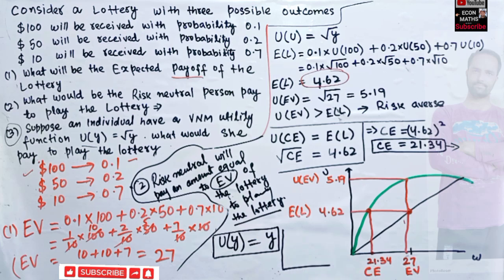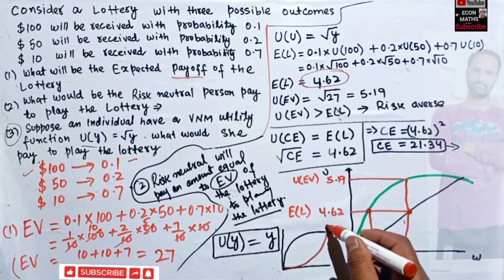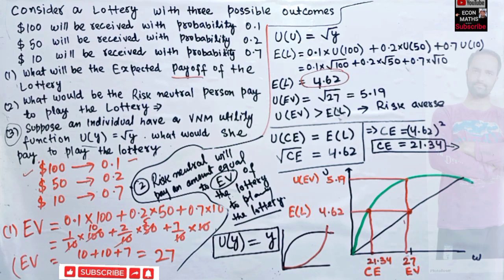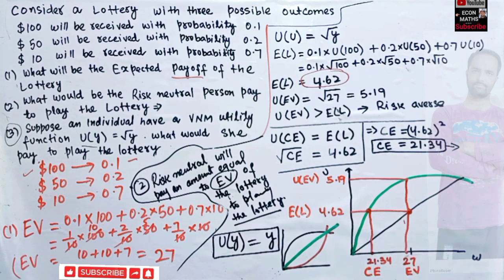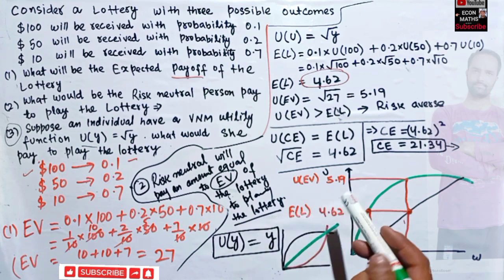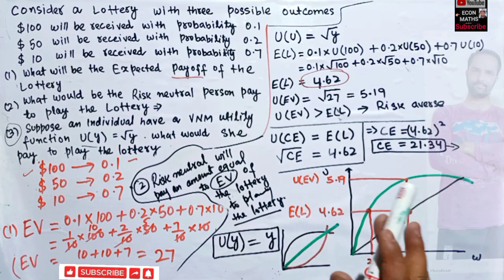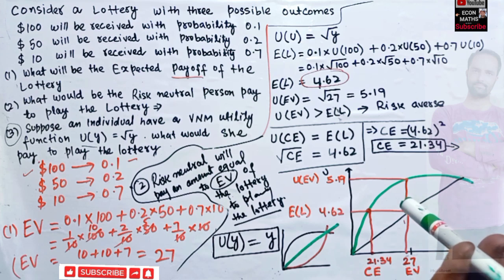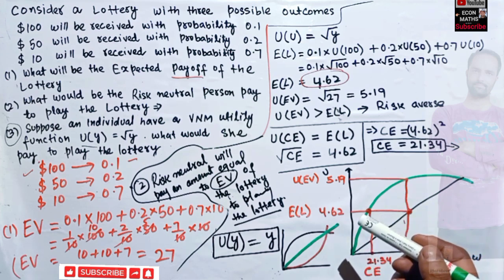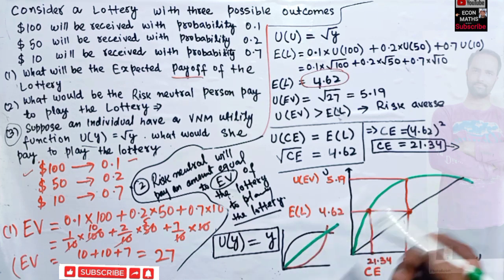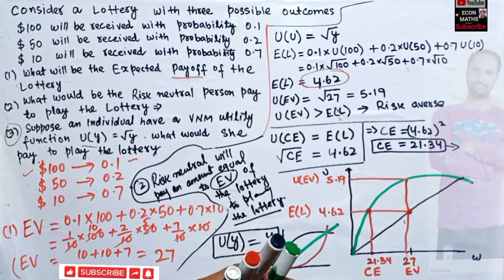There are three types of persons. A risk averse person has a concave utility function. A risk loving person has a convex utility function. A risk neutral person has a straight line utility function. Depending upon the utility function, a person pays an amount equal to the certainty equivalent of the lottery to participate. I hope this is clear — I am just a student of economics, so if there are mistakes please feel free to point them out.